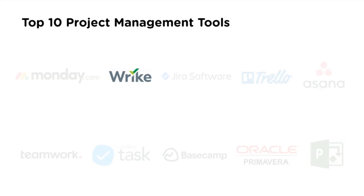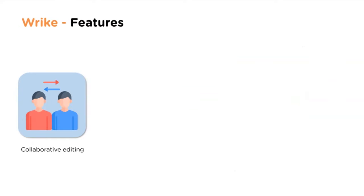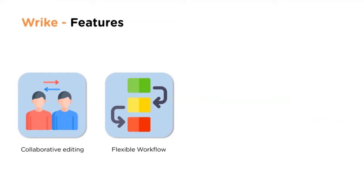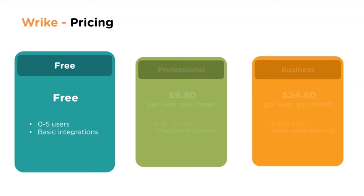Wrike is another project management tool released in 2006. It provides users with robust features and allows them to collaborate with each other. The website is www.wrike.com, used by over 18,000 organizations. Features include collaborative editing, flexible workflow, real-time reporting, and efficient work management.